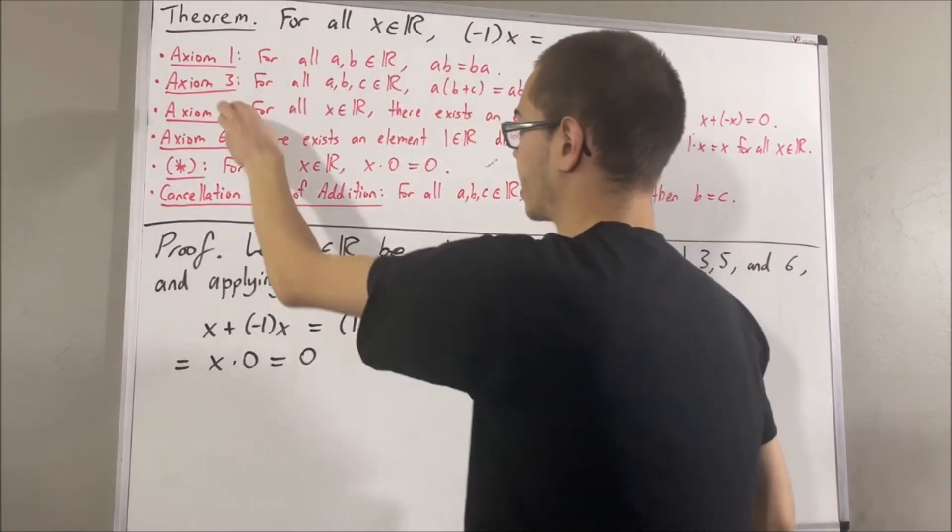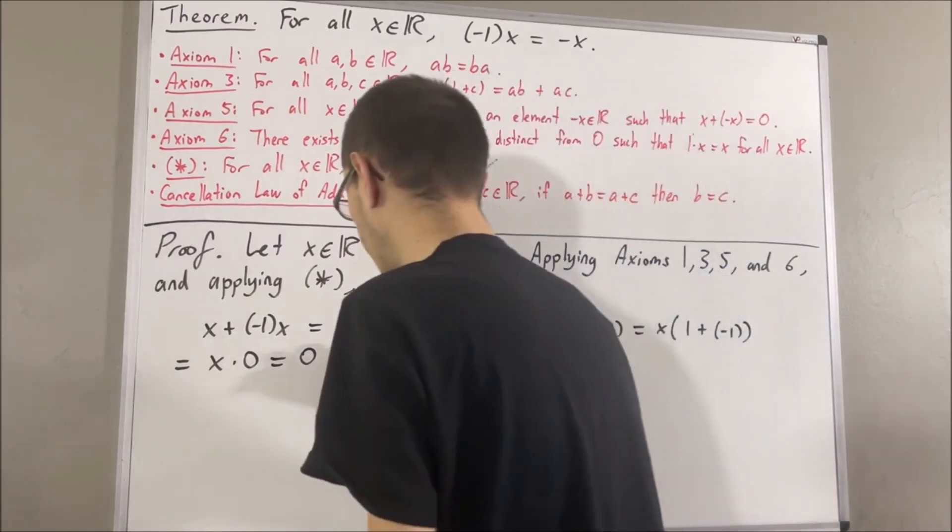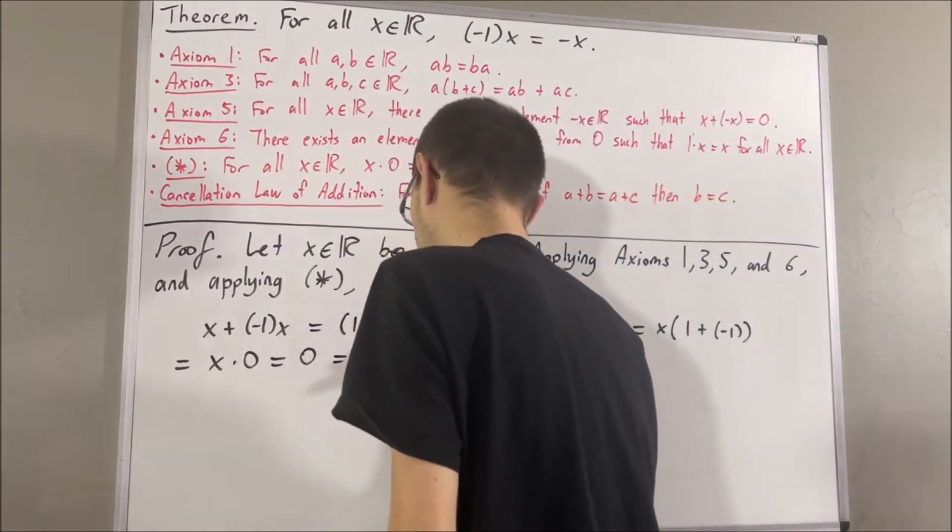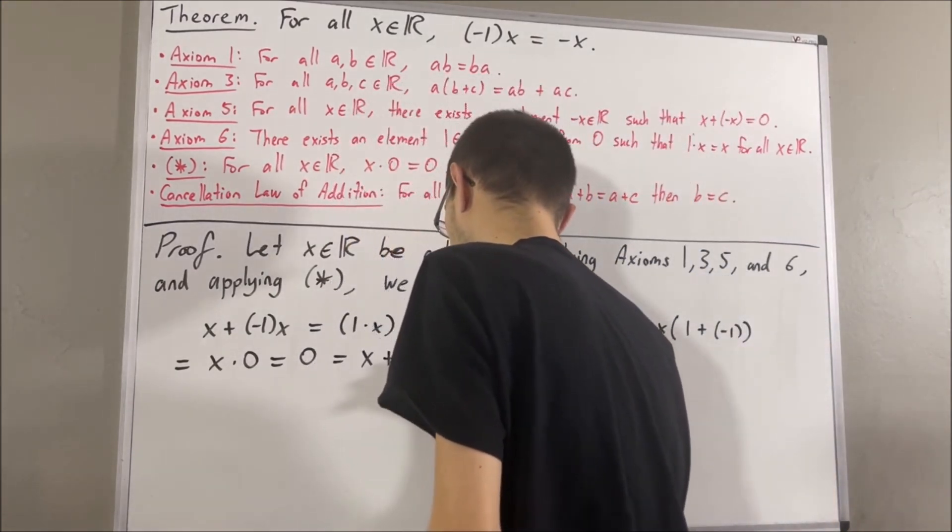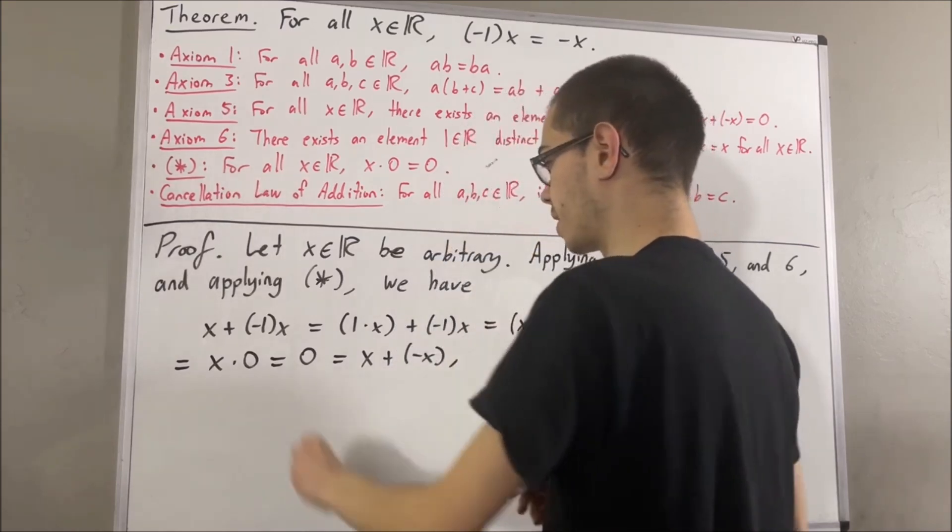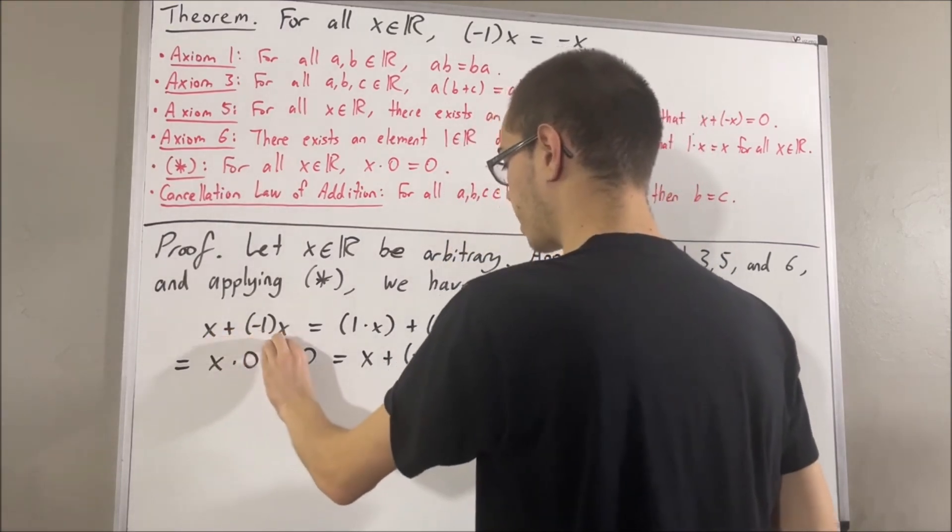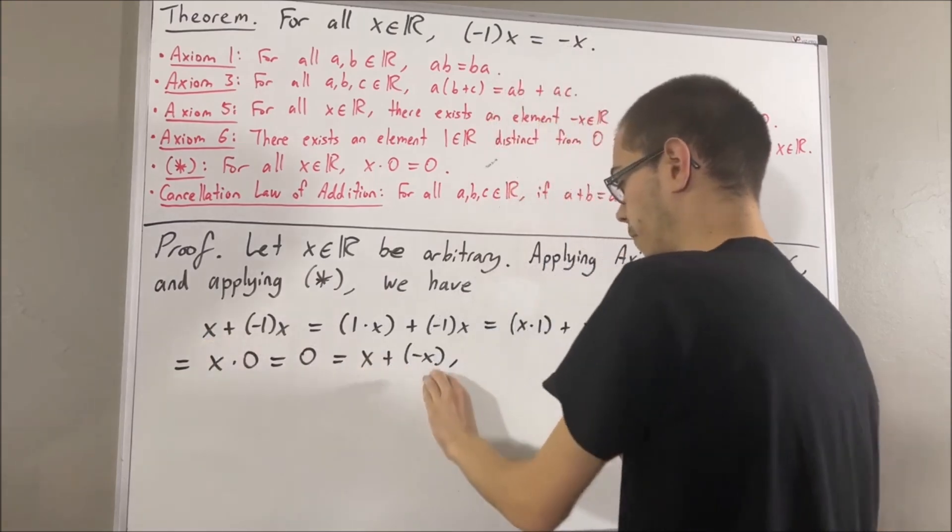And then, by axiom 5, we know that 0 is equal to x plus the negative of x. So this tells us that x plus negative 1 times x is equal to x plus the negative of x.